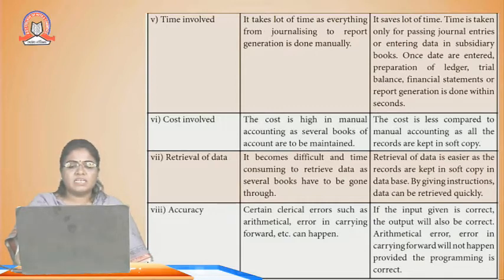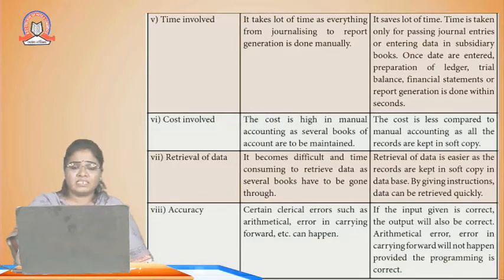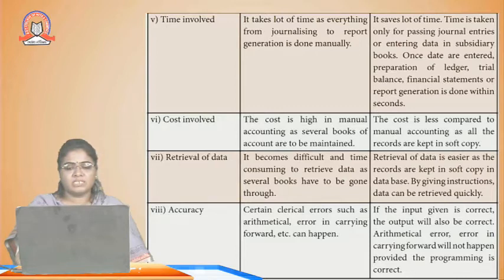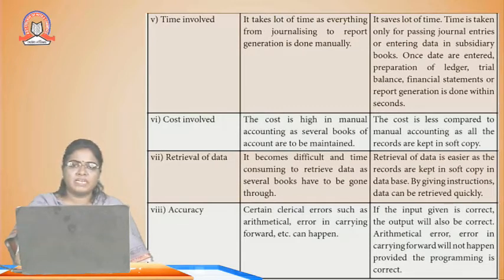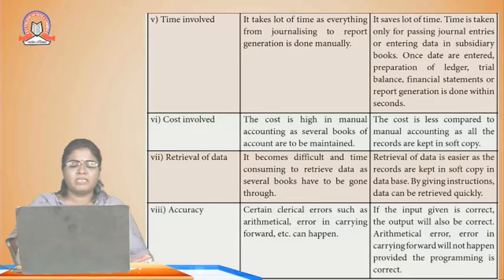Accuracy: in manual calculation, clerical errors such as errors in carrying forward can happen. But in CAS, if the input is correct the output will be correct — mathematical errors and errors in carrying forward will not happen, provided the programming is correct.